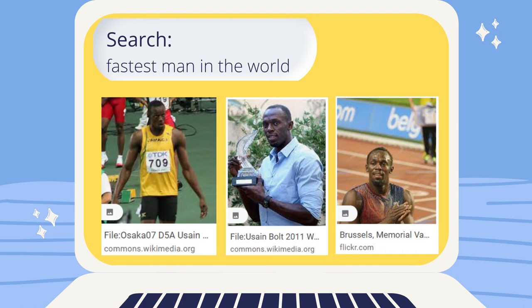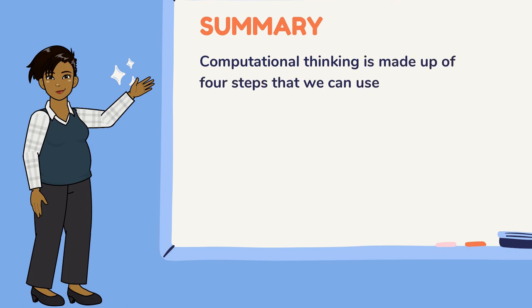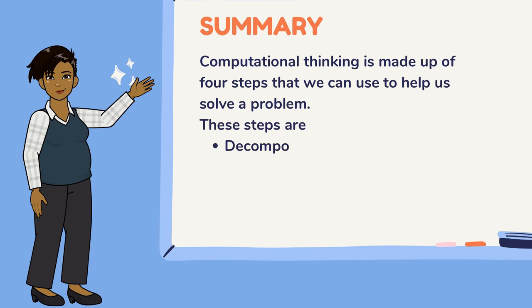Let's recap. Computational thinking is made up of four steps that we can use to help us solve a problem. These steps are: Decomposition, Pattern recognition, Abstraction, and Algorithmic design.